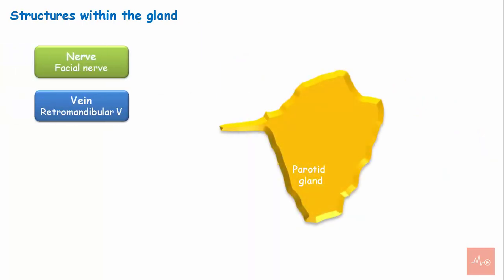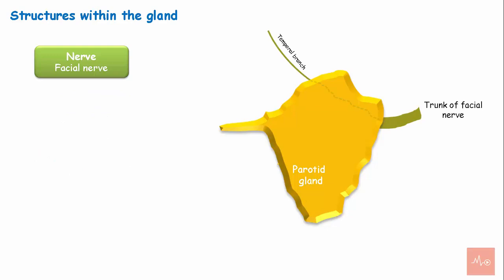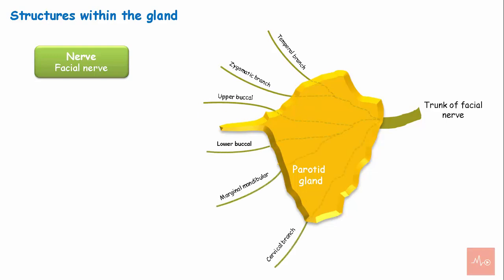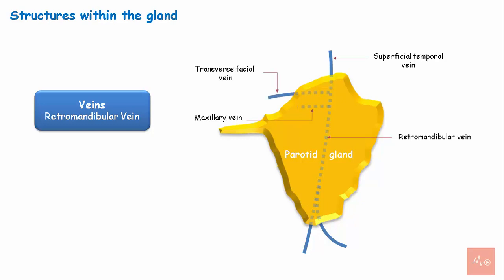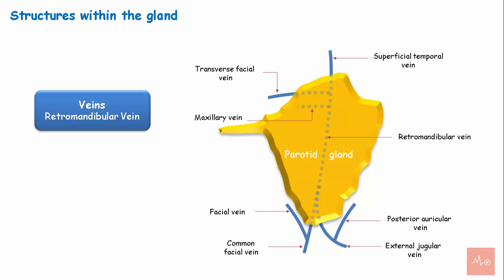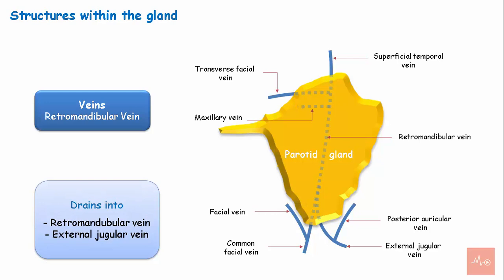The parotid gland is traversed by the facial nerve, retromandibular vein, and the external carotid artery. The facial nerve enters the gland at the posteromedial surface and gives out its branches: temporal, zygomatic, upper and lower buccal, marginal mandibular, and cervical branches, which radiate through the anterior border of the gland like a goose foot. The retromandibular vein occupies the central portion and is formed by the union of the superficial temporal vein with the transverse facial vein and maxillary vein. Its anterior branch joins the facial vein to form the common facial vein, and the posterior division joins the posterior auricular vein to form the external jugular vein.